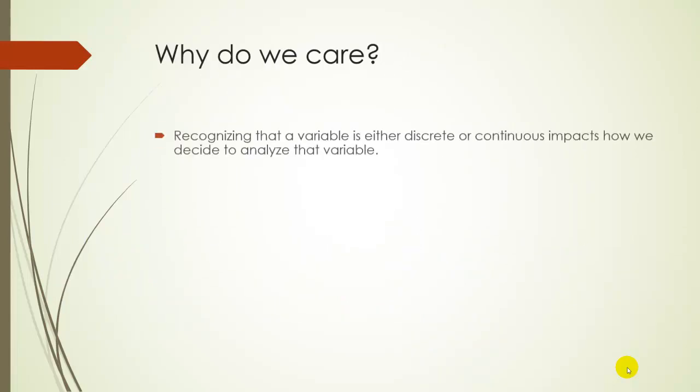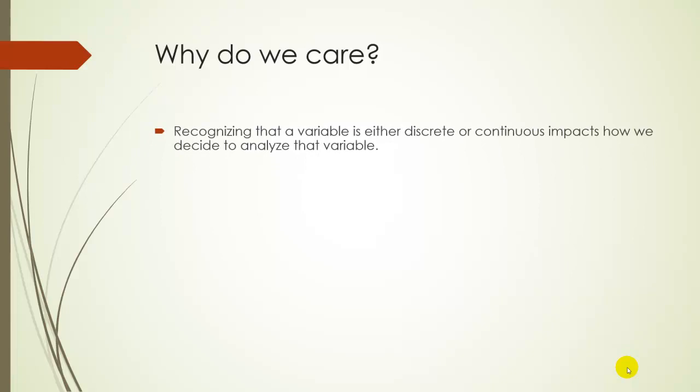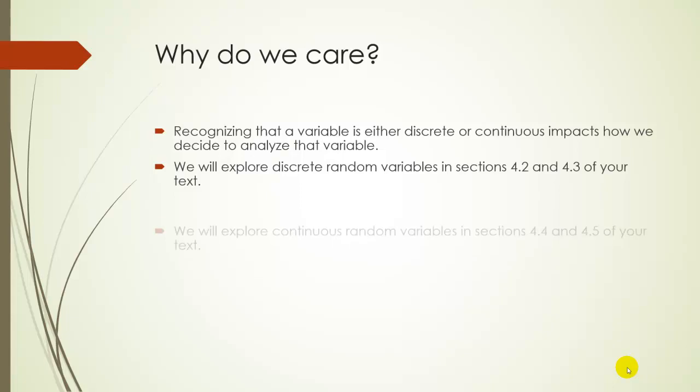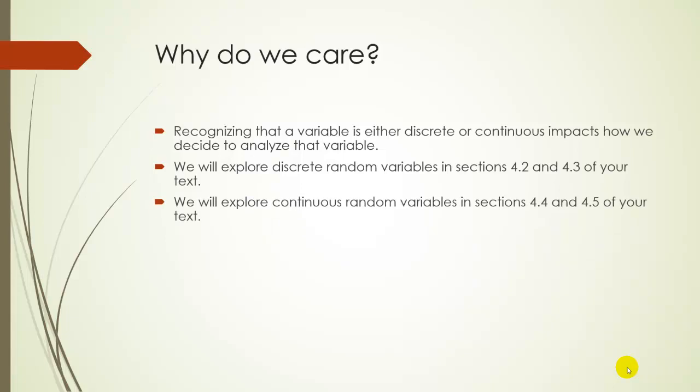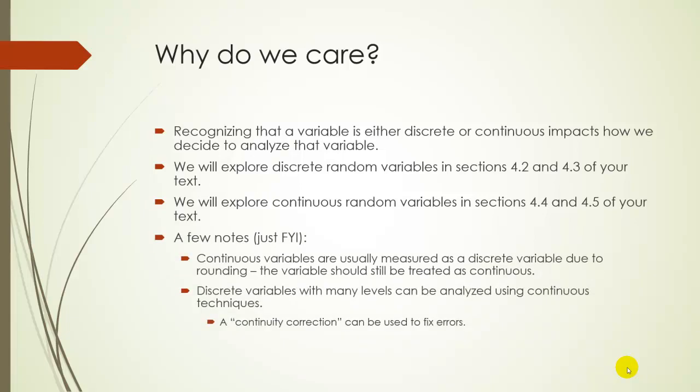Okay, so why do we care? So recognizing that a variable is either discrete or continuous will change how you decide to analyze that variable. So we'll explore these discrete random variables in the next sections, 4.2 and 4.3 of your text, and we'll explore continuous variables in 4.4 and 4.5. For the majority of the rest of the course, we'll actually be dealing with continuous random variables, but I should make just a few notes here.